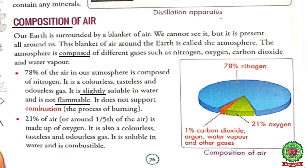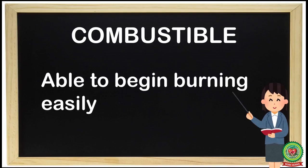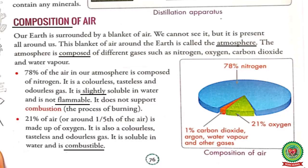Now next is oxygen. 21% of air — that is, around one fifth of the air — is made up of oxygen. It is colorless, tasteless and odorless gas. It is soluble in water and is combustible. Now underline the word 'combustible' and write its meaning: able to begin burning easily. So students, oxygen is soluble in water, and this dissolved oxygen is used by aquatic animals — that is, animals that live in water — to breathe. Oxygen is combustible and it helps in burning, so without oxygen combustion is not possible.